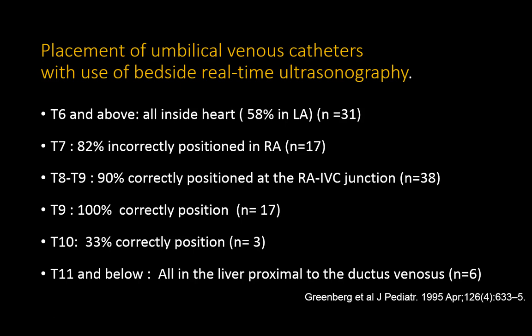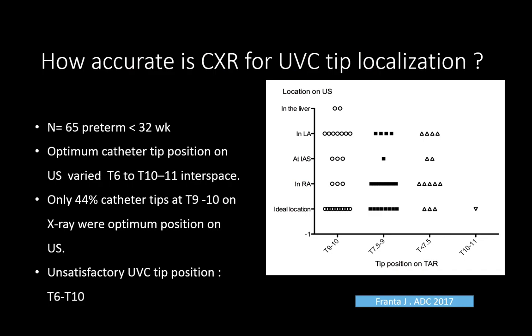By T10, only one out of three tips were in the correct position. All catheter tips at T11 and below were in the liver, proximal to the ductus venosus. Based on these early studies, T8 to T10 is considered the acceptable range.